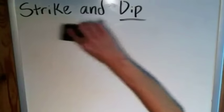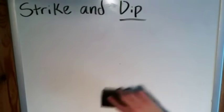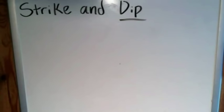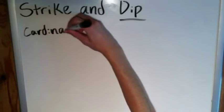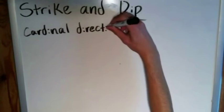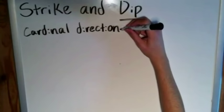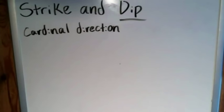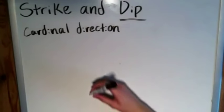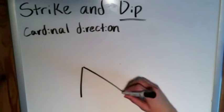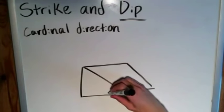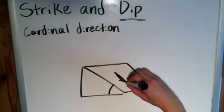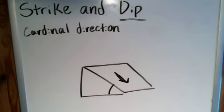Strike is much simpler, but I like to cover dip first because there's a benefit to understanding dip before you jump into strike. What strike really is, is a cardinal direction — that's it. It sounds deceptively simple, but that's really all it is. If we take a look at another simple block diagram with our triangular prism, you'll recall the angle of dip and the direction of dip.